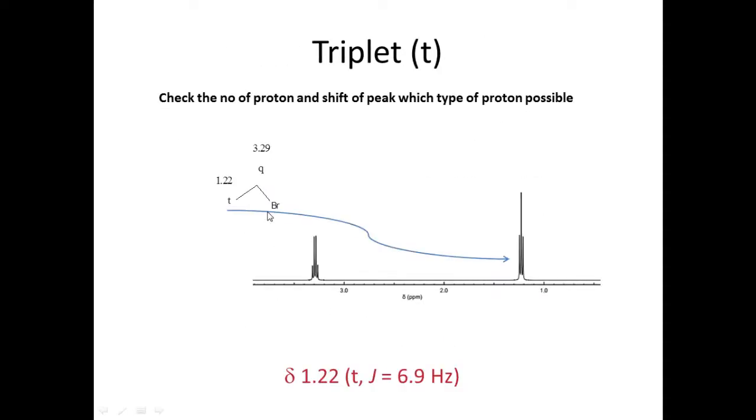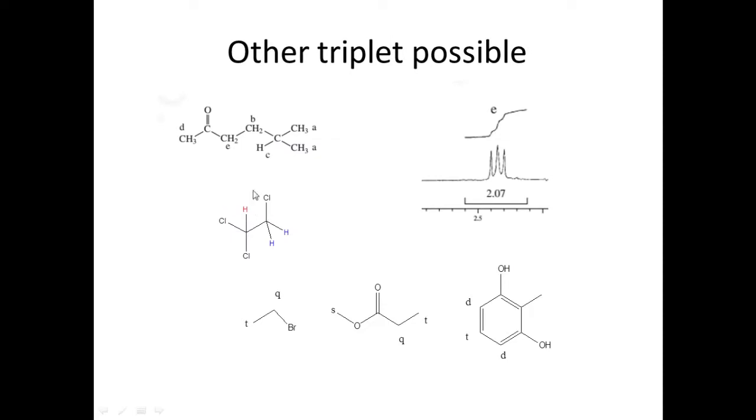So the other possible triplet from compounds like this type of environment proton is also having triplet. This proton also triplet. This is already discussed triplet. So this type of proton also triplet and this is also triplet.